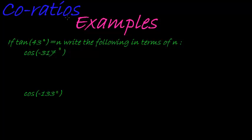Okay, so in our final example of co-ratios, it looks quite complicated, but it's actually not that bad. If tan of 43 degrees is equal to n, write the following in terms of n.